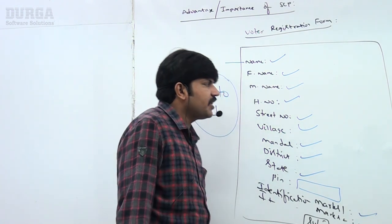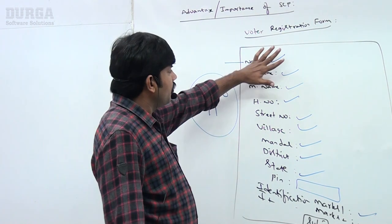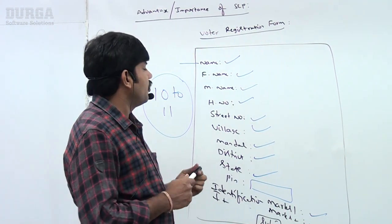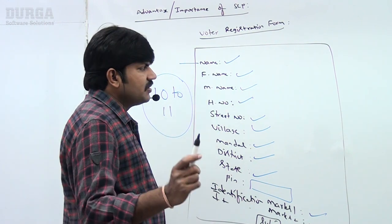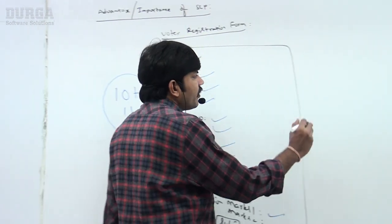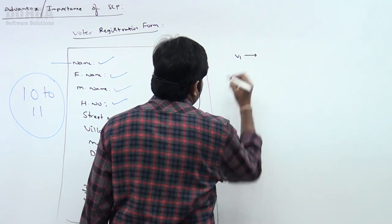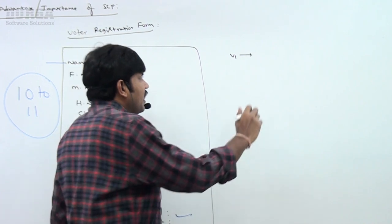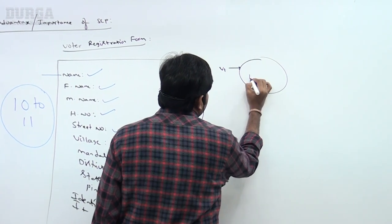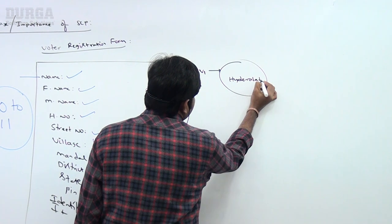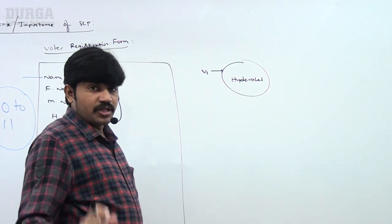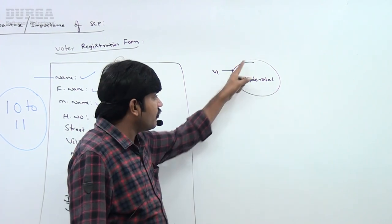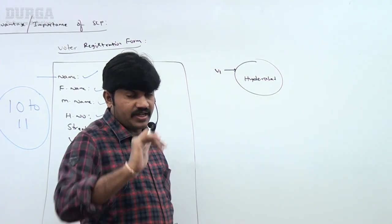Now, here take very special care. I want to fill my details for a water registration. Just observe: for Voter 1, Water 1 is coming, and he entered the city name as Hyderabad. For that one String object got created.